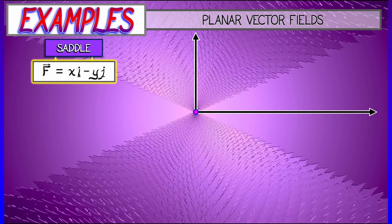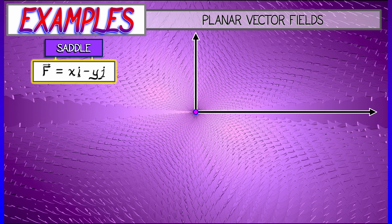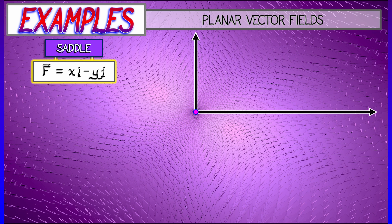You are pointed out away from the origin in contrast to what happens along the y-axis where you have purely vertical components to that vector field, but you are pointed in towards the origin.